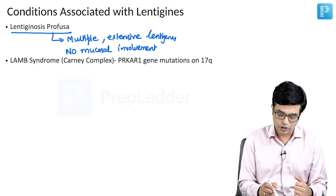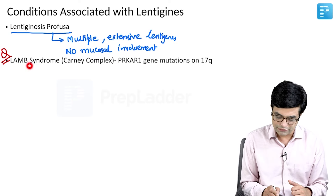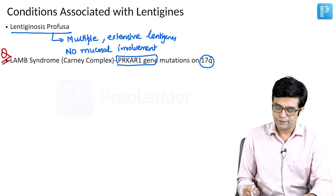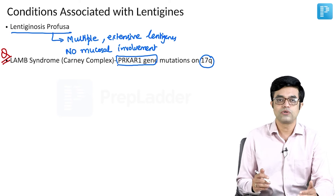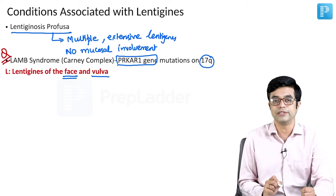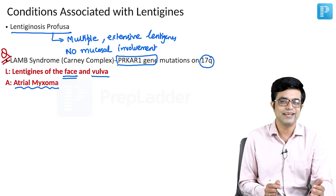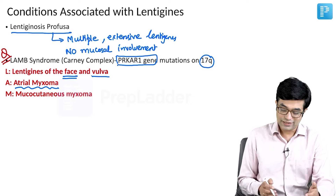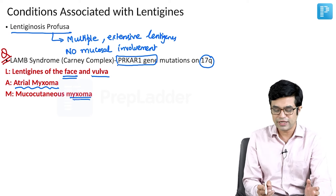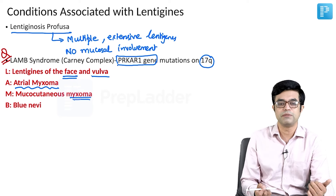The second condition is LAMB syndrome, also called Carney complex, on which an MCQ has already been asked in the super-speciality exam. It involves PRKAR1A gene mutation, present on the long arm of chromosome 17. L stands for lentigines of the face and, in females, also on the vulva. A stands for atrial myxoma — strongly associated with myxomas, the most common benign tumours of the heart in adults, though less common in children, they do occur in adolescence as part of Carney complex. M stands for mucocutaneous myxoma — myxomatous benign tumours can occur on the oral cavity as well as on the skin. B stands for blue nevi — multiple hyperpigmented blue-coloured nevi may be present in these children.